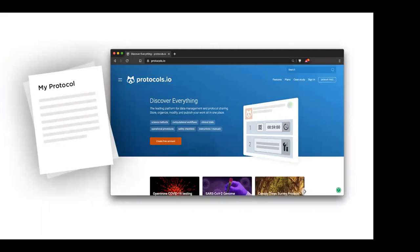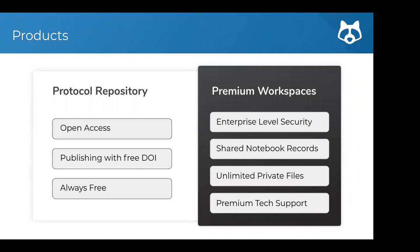For anybody new to protocols.io: it's really a central place for protocols — one place where you can store, share, develop, and even publish protocols. The platform can be split into two parts. One is an open access protocol repository where you can publish protocols, always for free. The other is a private option where you can keep protocols private, collaborate internally, and develop protocols just for your team.